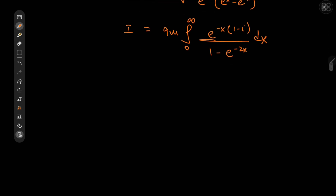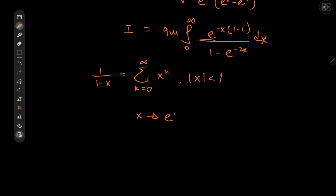For our series expansion, recall that 1/(1 minus x) equals the sum over k from zero to infinity of x^k, provided the absolute value of x is less than 1. Replacing x by e^{-2x}, which is indeed less than 1 on our interval, we have 1/(1 minus e^{-2x}) equal to the sum over k from zero to infinity of e^{-2kx}.